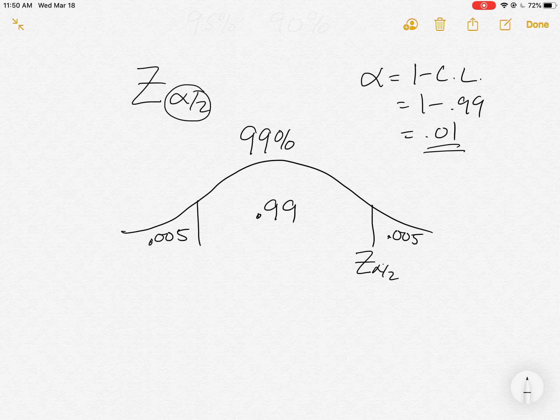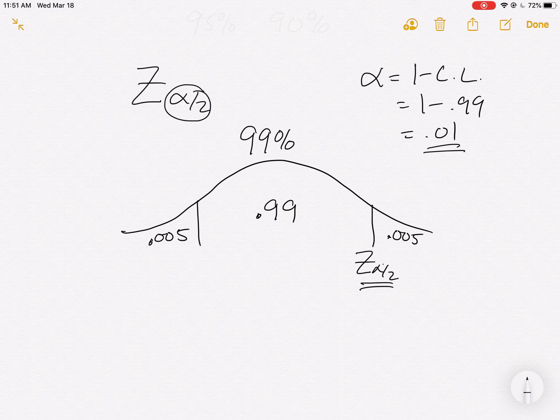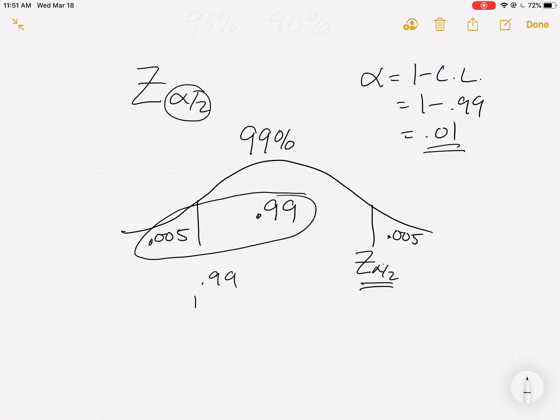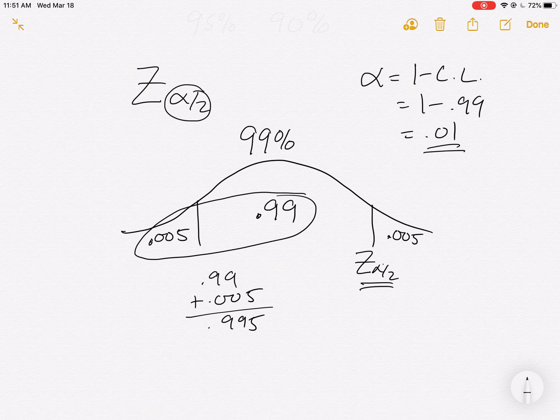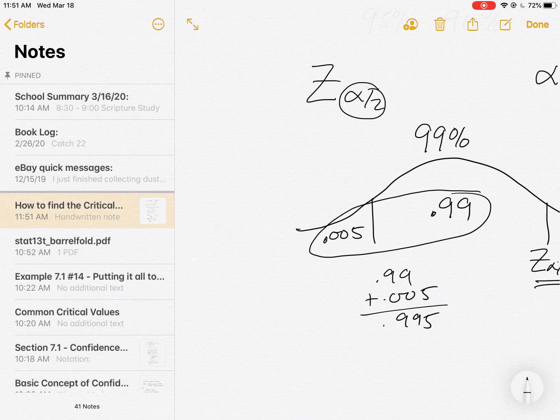If I want to find z alpha over 2 in my chart, I really have everything that I need. What I know is that that chart will tell me what the z value is, provided I'm able to give it area to the left. So if I look at the full area to the left, which is what the chart's going to want, it is 0.99 plus 0.005 or 0.995 to the left. Then we'll turn to our chart.